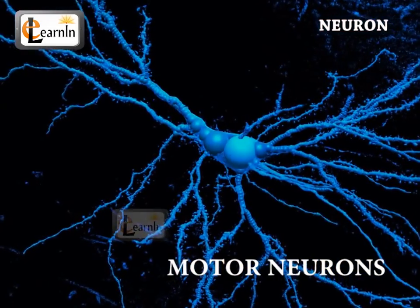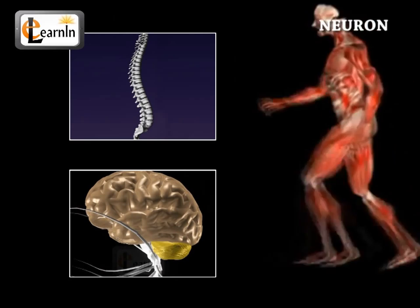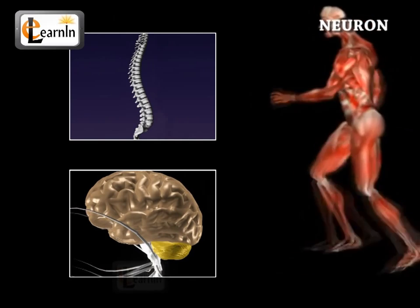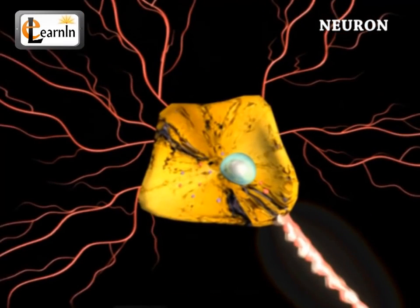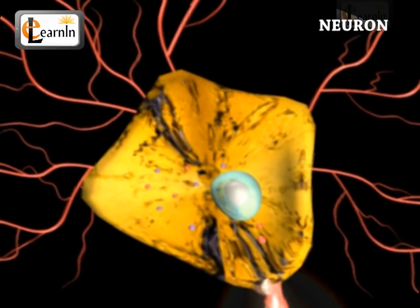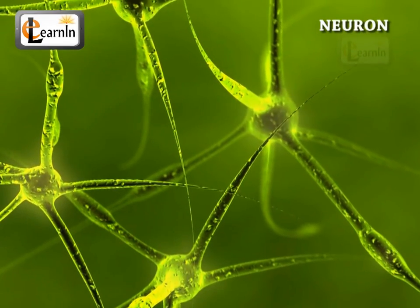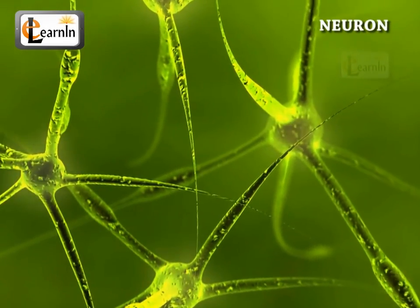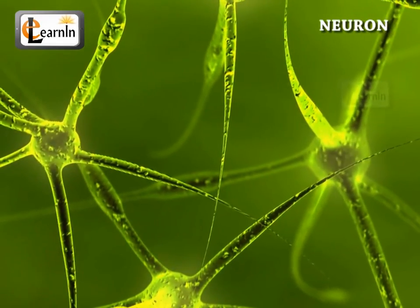Motor neurons are neurons that receive impulses from the spinal cord or the brain and send them to the muscles causing muscular contraction, and these also affect gland secretion. A typical neuron has a soma in its center, which contains the nucleus of the cell, and hence this is where protein synthesis occurs. The neural function is based on synaptic signaling, the pathway that helps in the transmission of signals, which is partly electrical and partly chemical.